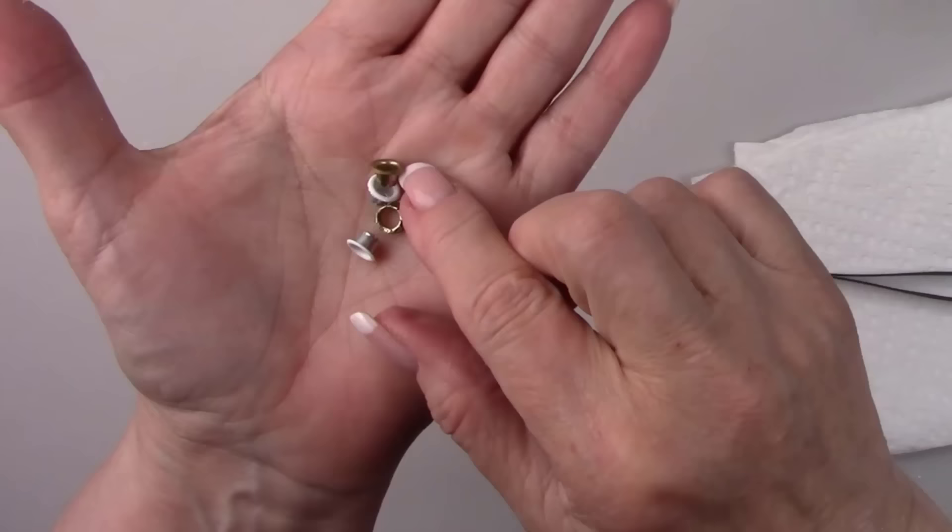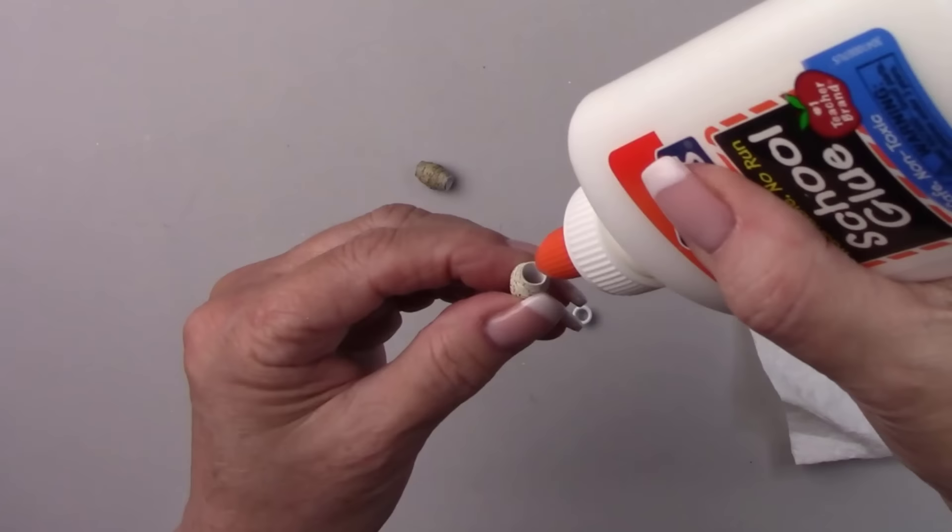I'm going to glue some eyelets in the top and bottom of the beads that I rolled with the large cotter pin and the straw because the holes are really big.